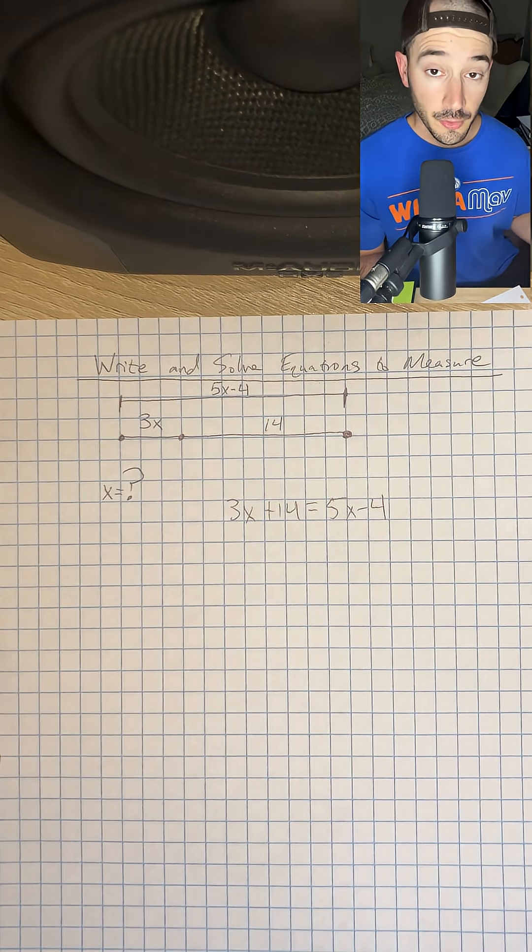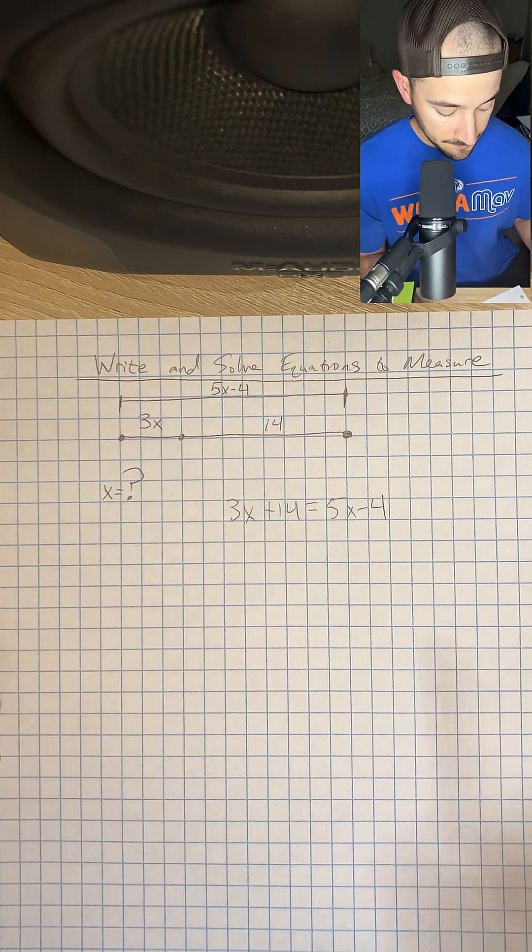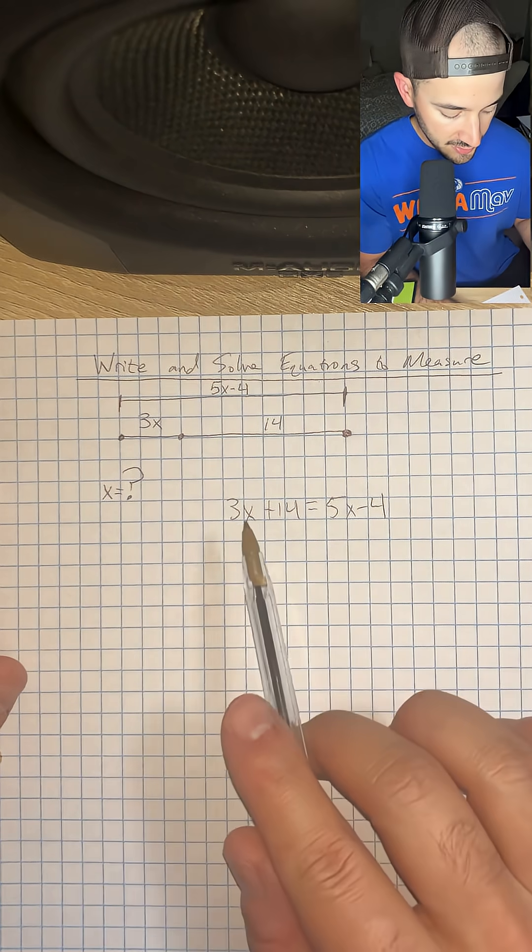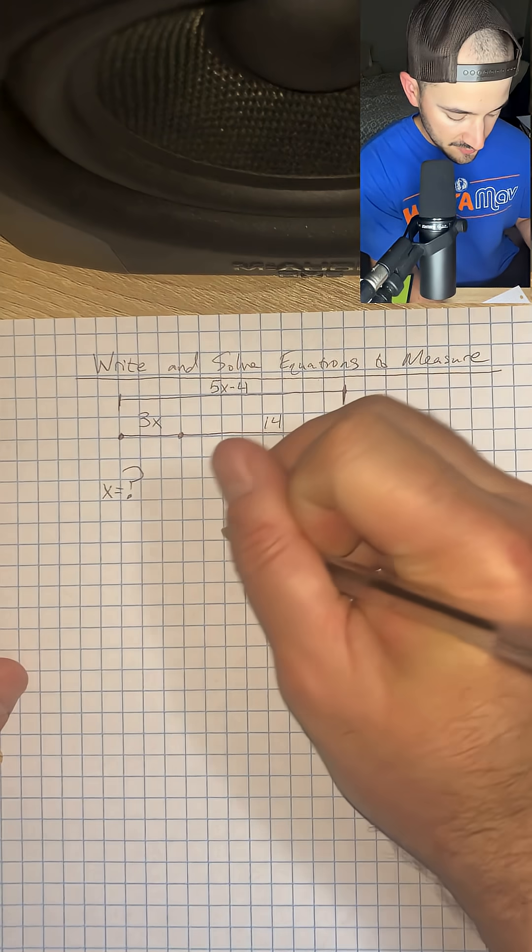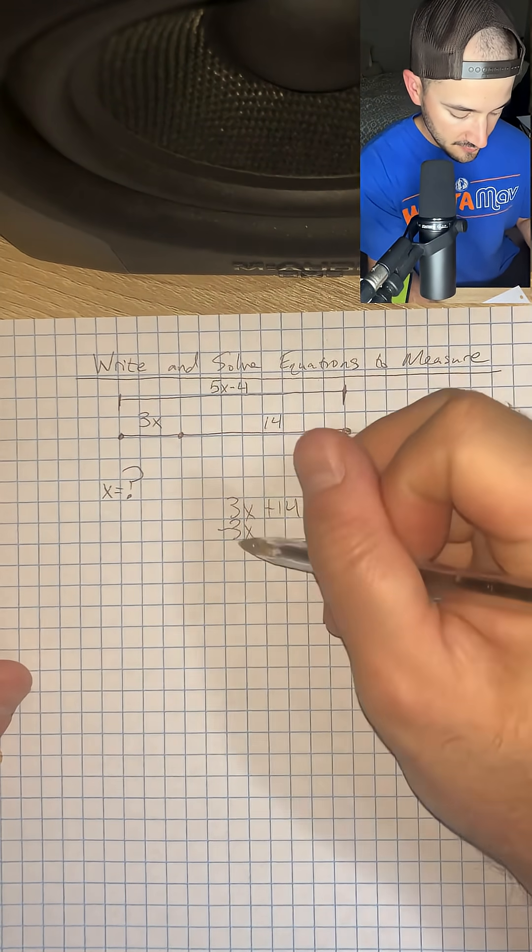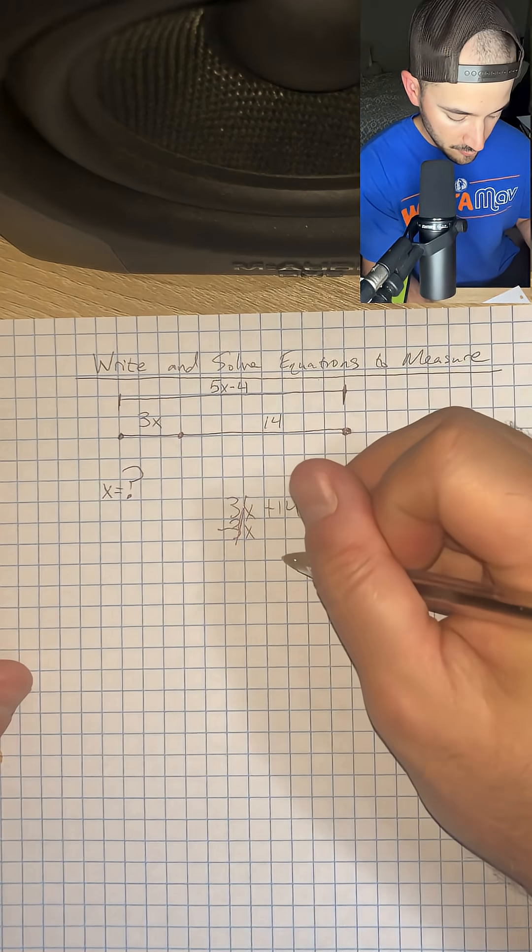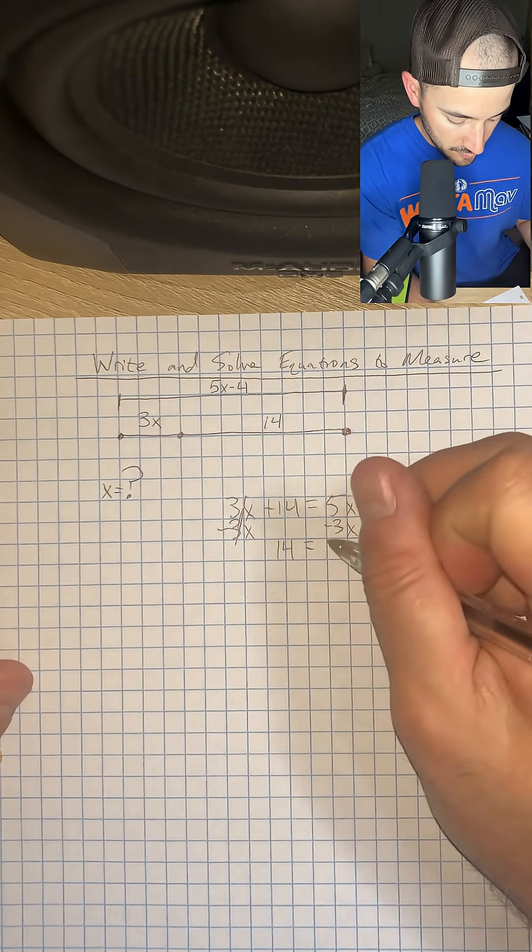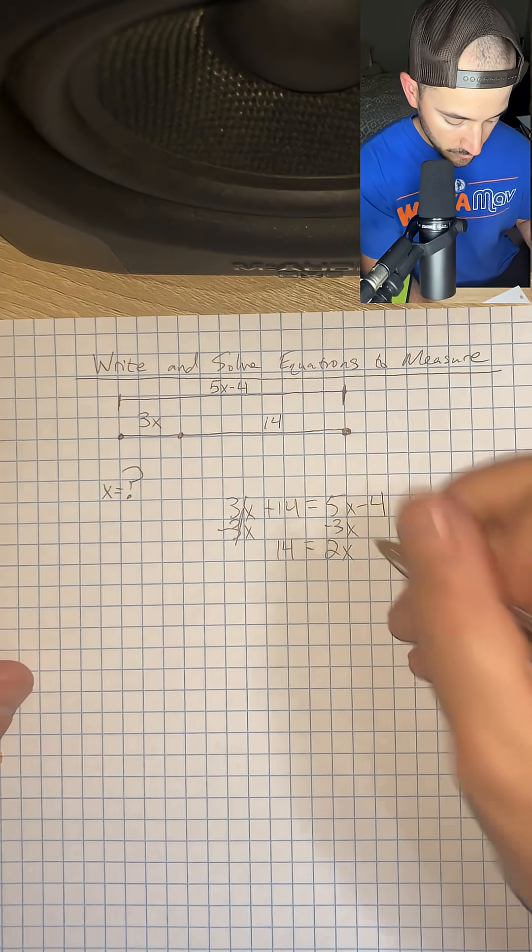So we're going to cancel out one of these variables. I'm going to cancel out the 3x, so I'm going to subtract 3x from both sides so that it cancels and leaves us with positive 14 is equal to 5x minus 3x, which is 2x minus 4.